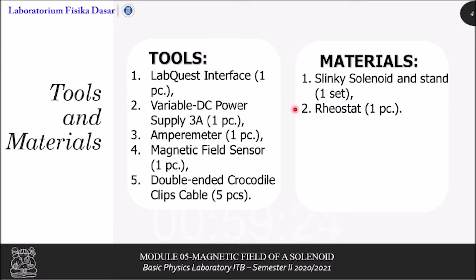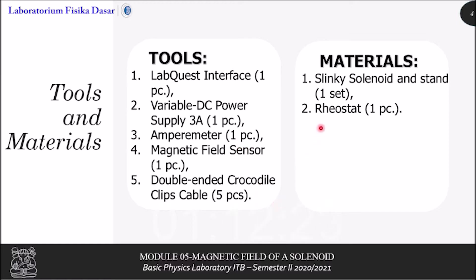The tools and materials needed for these experiments are: a LabQuest interface, a variable DC power supply of 3 amperes, an amperimeter, a magnetic field sensor, a double-ended crocodile clips cable, a slinky solenoid and its stance, and also a rheostat.